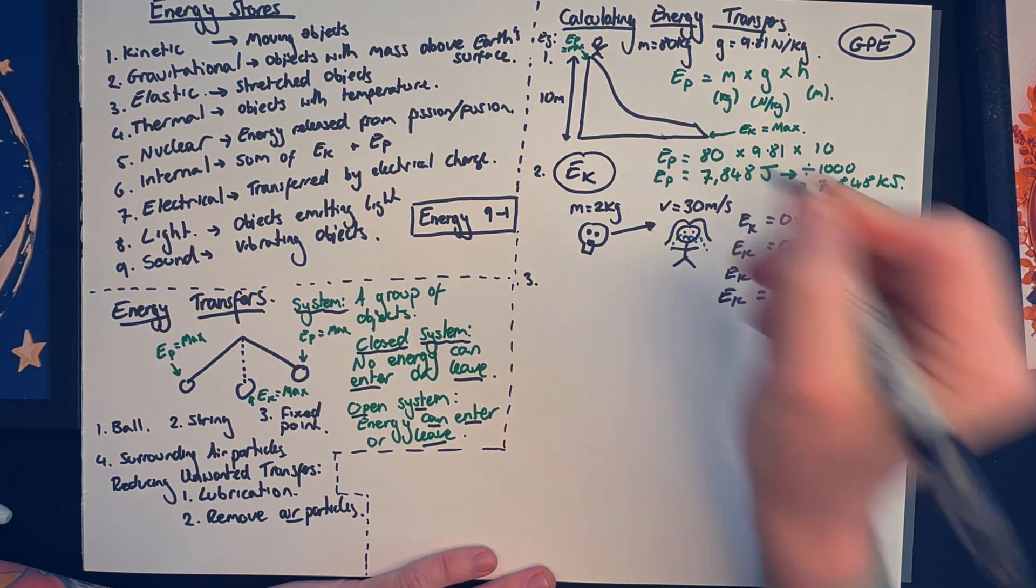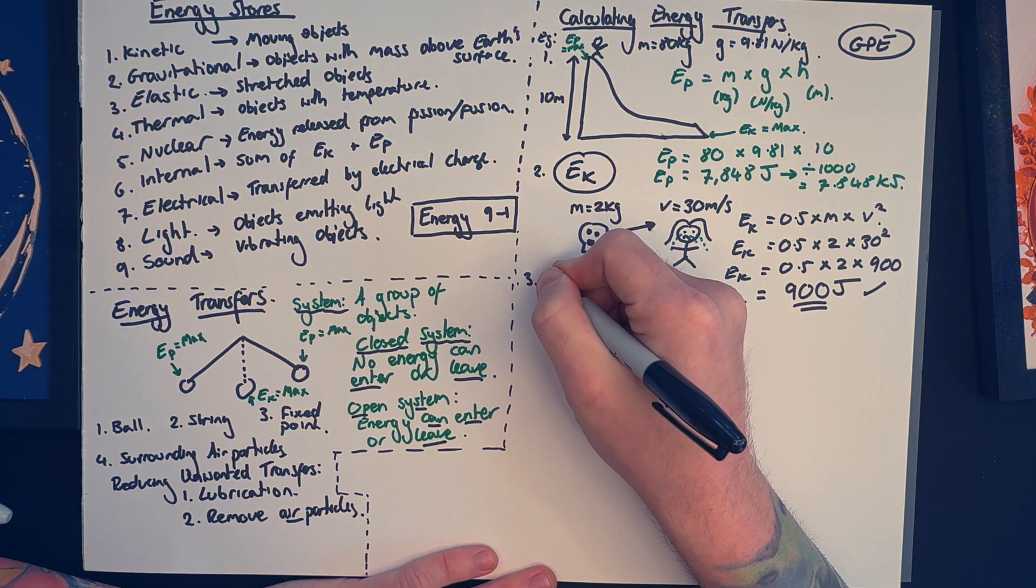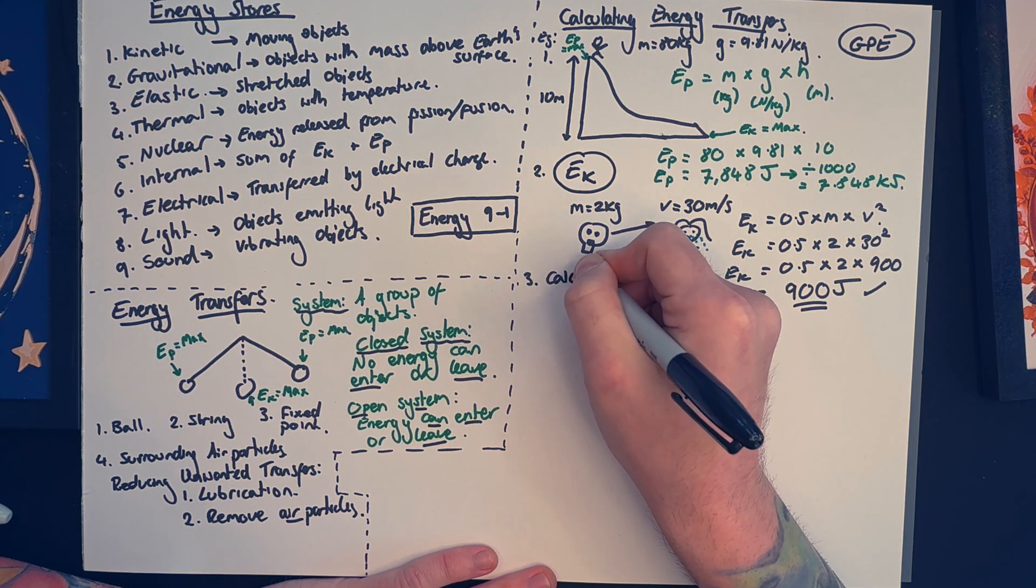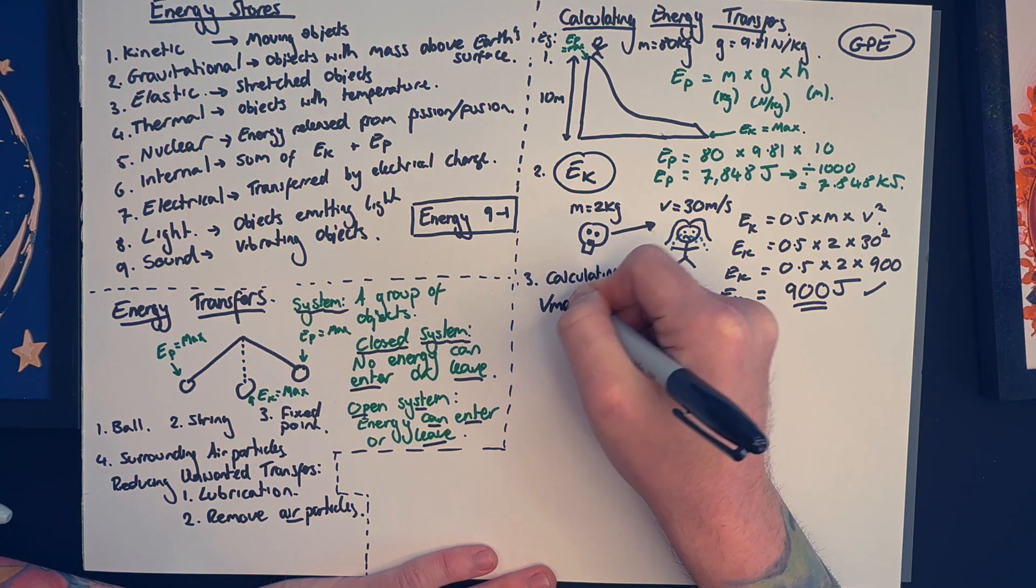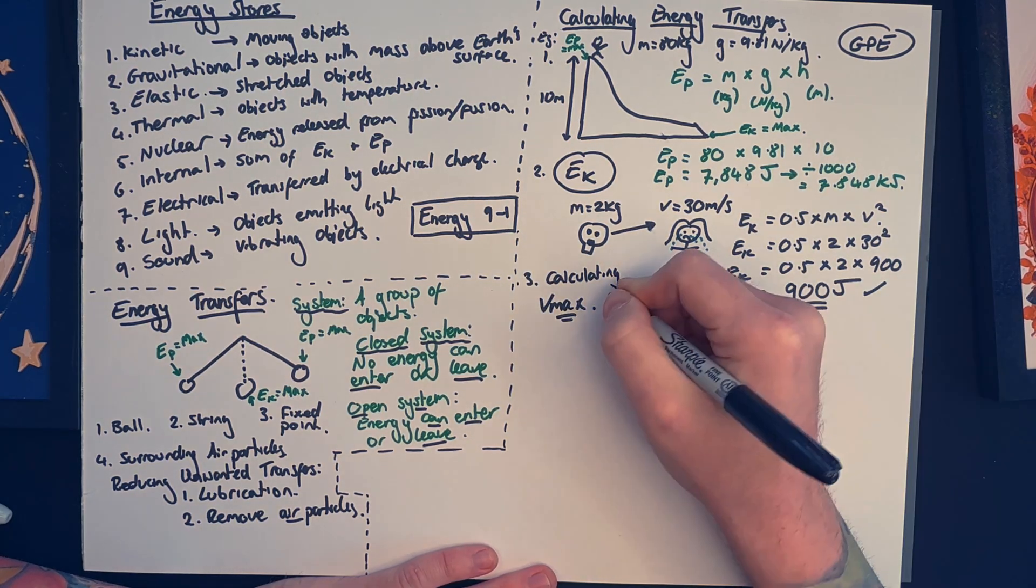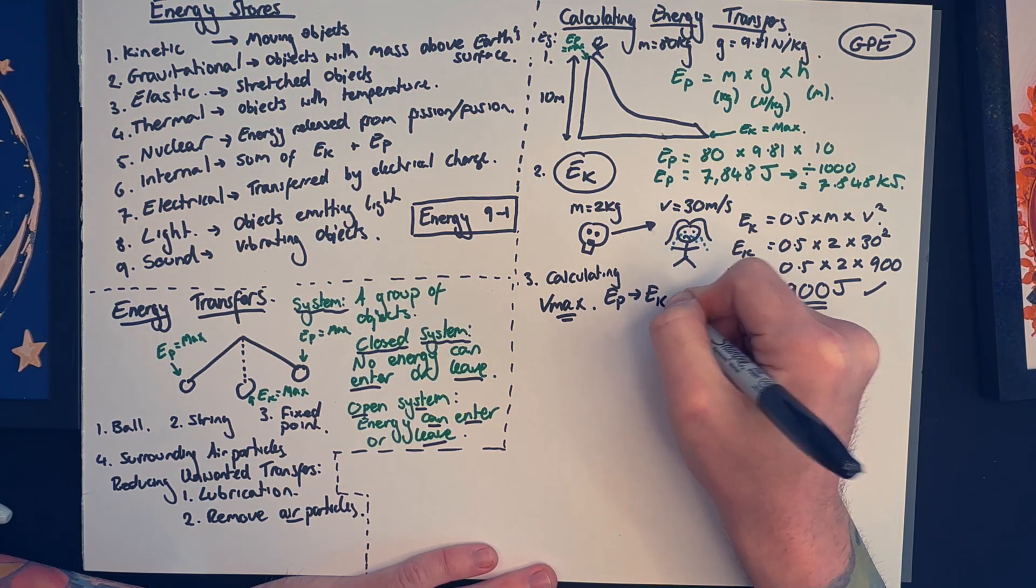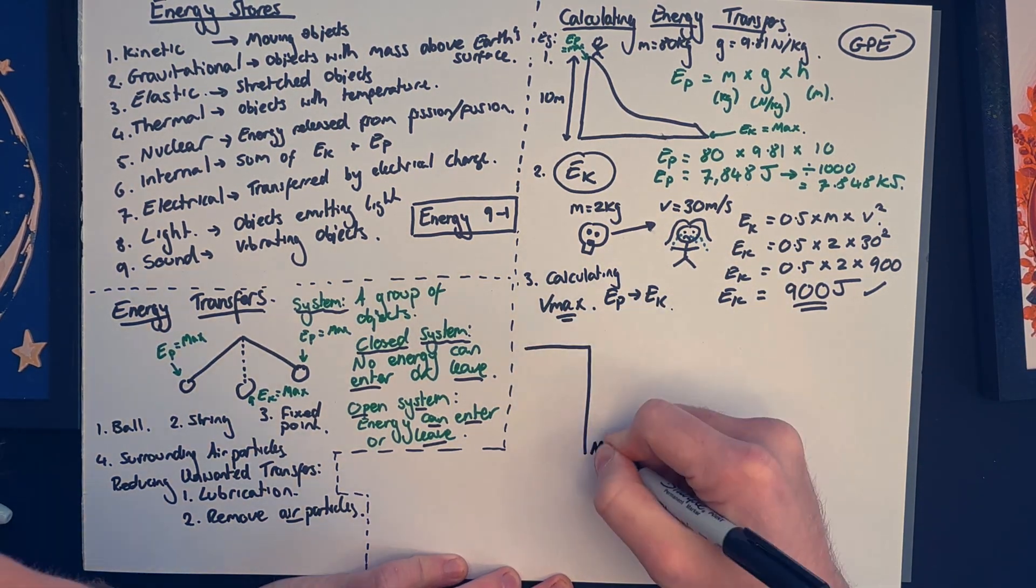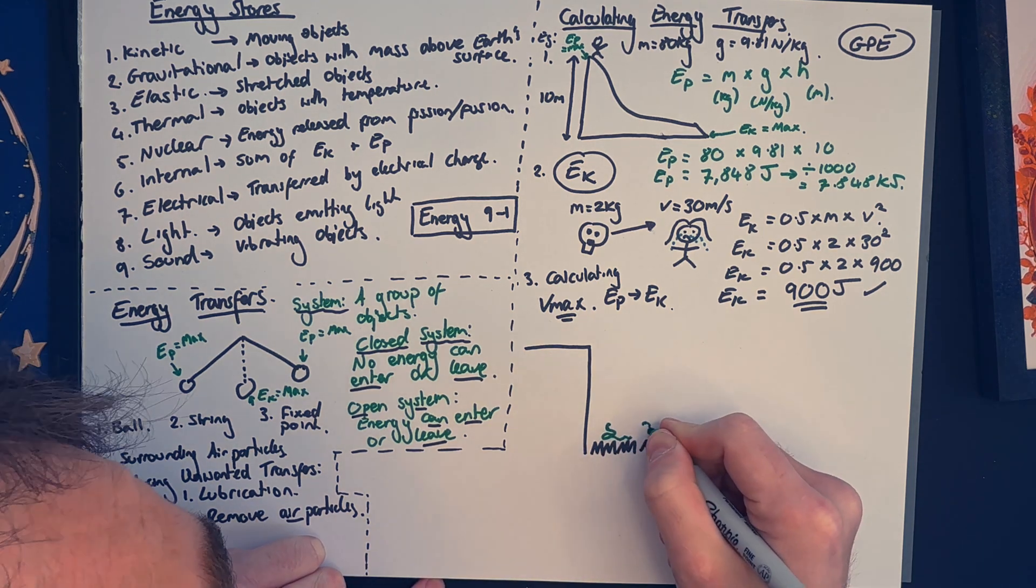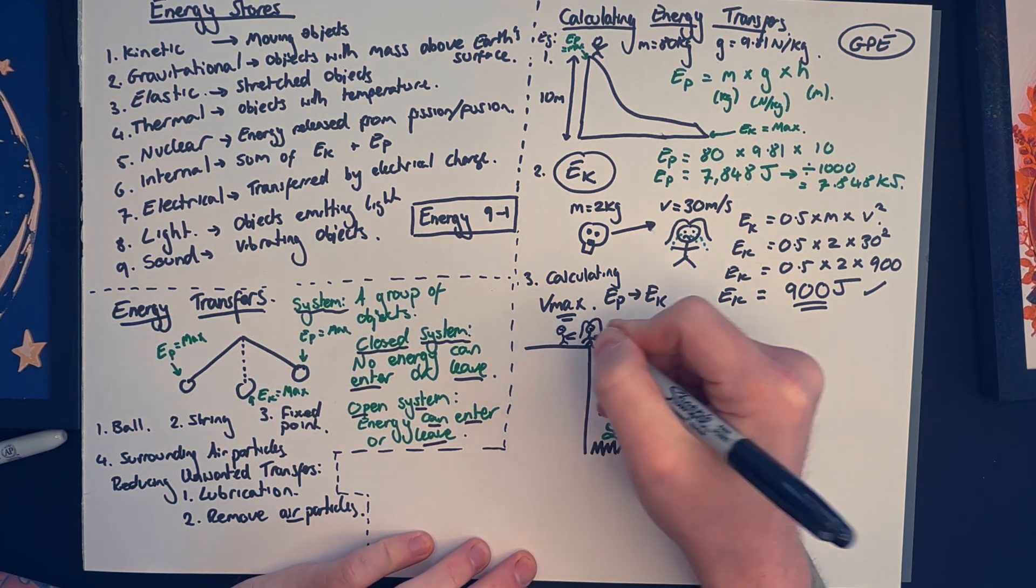All right, next one. This is kind of more for the higher paper, but they absolutely will ask this, right up to maximum of five to six marks at GCSE. They often ask you to find the maximum velocity of a falling object. Now to do this one, we take the gravitational potential energy stored in the object and we need to make it equal to the kinetic energy. We're assuming that all the gravitational potential energy gets transferred to kinetic energy.